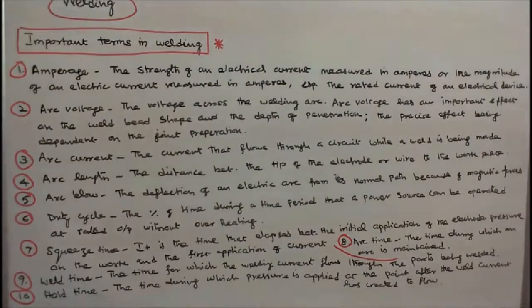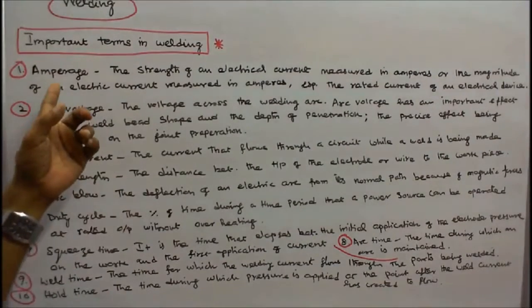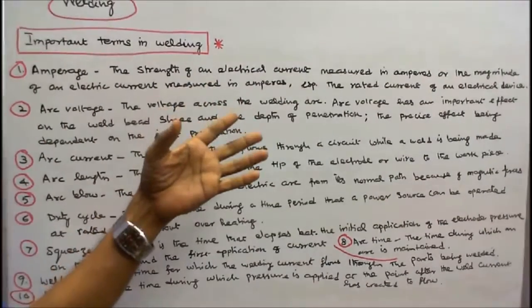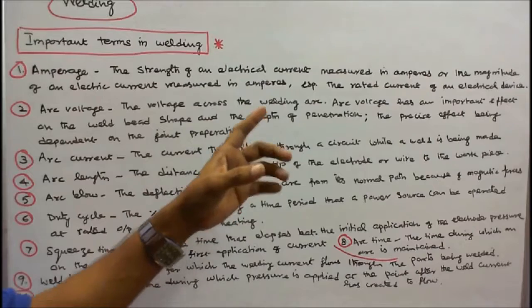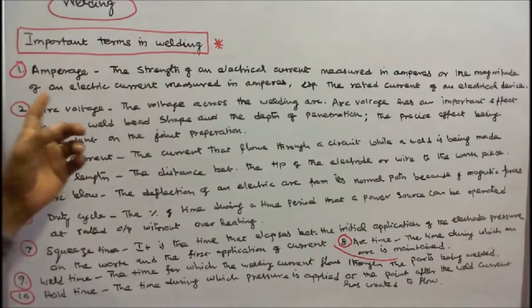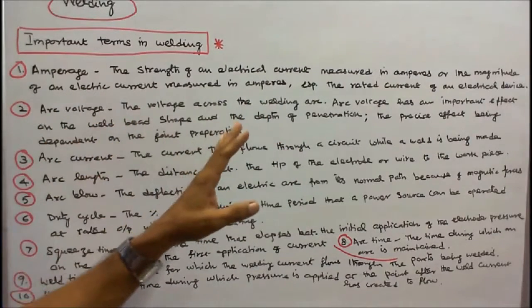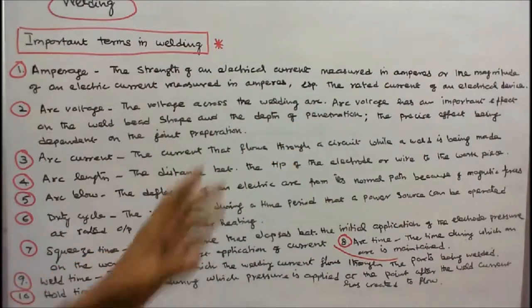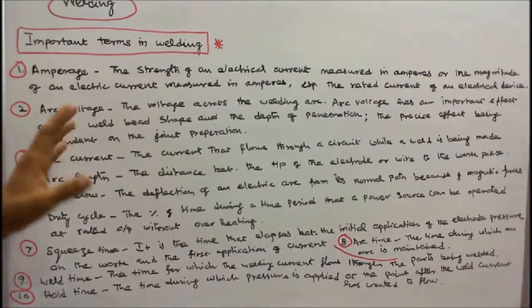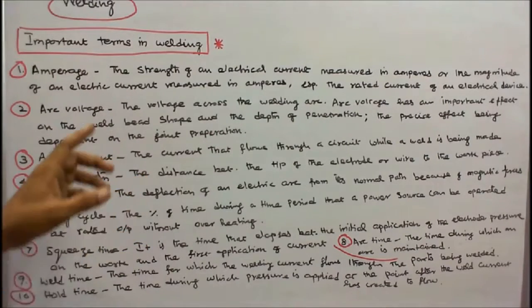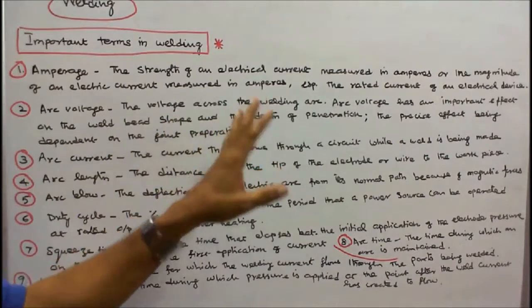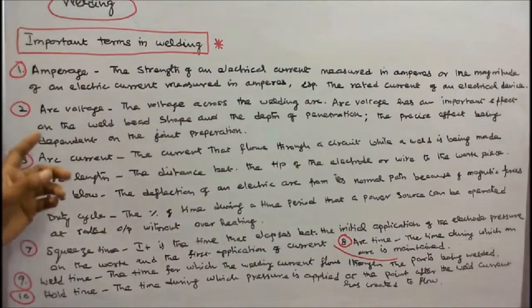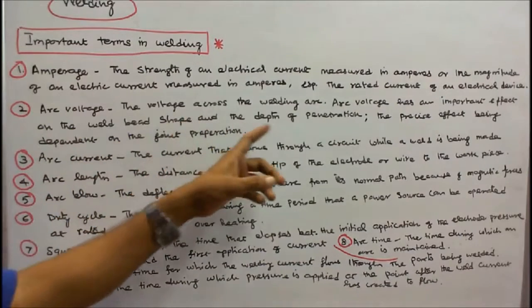Important terms in welding. Number one, amperage: the strength of an electrical current measured in amperes, or the magnitude of an electric current measured in amperes, especially the rated current of an electrical device or component. Number two, arc voltage: the voltage across the welding arc. The arc voltage has an important effect on the weld bead shape and the depth of penetration, the precise effect being dependent on the joint preparation.